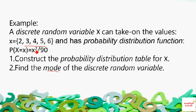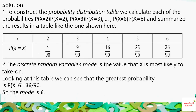Using the formula x²/90: when x = 2, P = 4/90; when x = 3, P = 9/90; when x = 4, P = 16/90; when x = 5, P = 25/90; when x = 6, P = 36/90. This completes the probability distribution table.